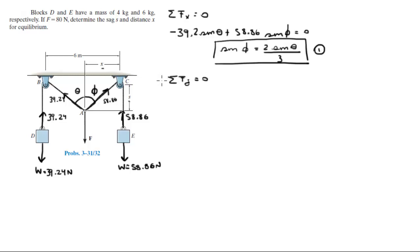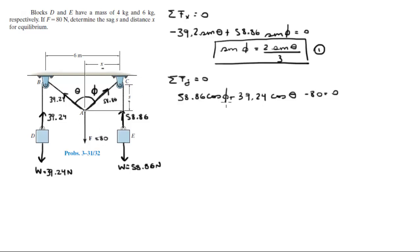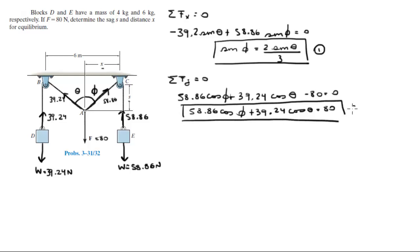The sum of the forces in the Y is also equal to zero. So 58.86 cosine of phi plus 39.24 cosine of theta minus 80 is equal to zero — remember the force is given as 80 N. So 58.86 cosine of phi plus 39.24 cosine of theta equals 80. Let's call this equation 2.